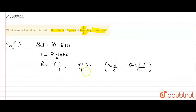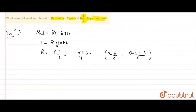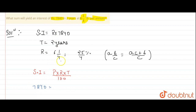So R is 25 upon 4%. Now, we know the formula for simple interest: SI equals P cross R cross T, divided by 100. SI is Rs. 7840, P is the principal which we have to find, R is 25 upon 4, and T is 2. There is also the 100 in the denominator.